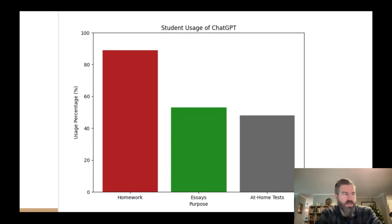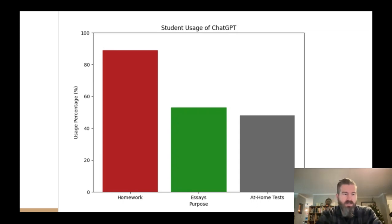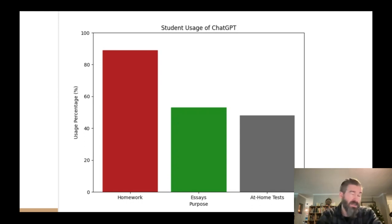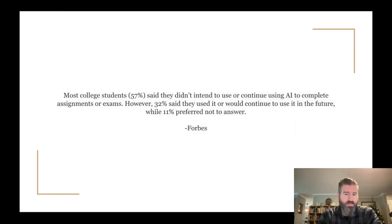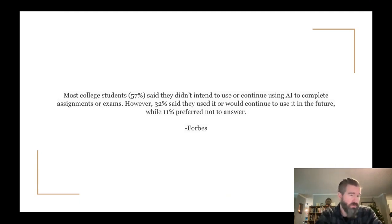I realized that the way students self-report usage changes and depends on social conformity — who you're talking to. You may not admit using ChatGPT to an instructor, but you might admit it to a friend. So here's another quote from Forbes. I use Forbes just because I'm more familiar with it — it's a good source to use.